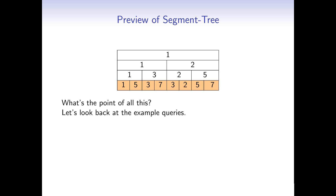Let's look back at the example queries. First we wanted to compute the minimum of range 1 to 7 — those are 6 nodes. Instead of iterating over all 6 nodes, we can iterate over just 4 nodes in higher layers, because these 4 nodes also contain the minimum of the range. We can easily determine the minimum value, which is 2.